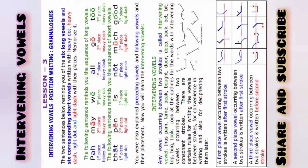The following sentence reminds you of the sequence of short vowels: that, pen, is—first, second, third places of light dot. Not much good is light dash. We'll also explain preceding vowels, following vowels, and their placements for intervening vowels.